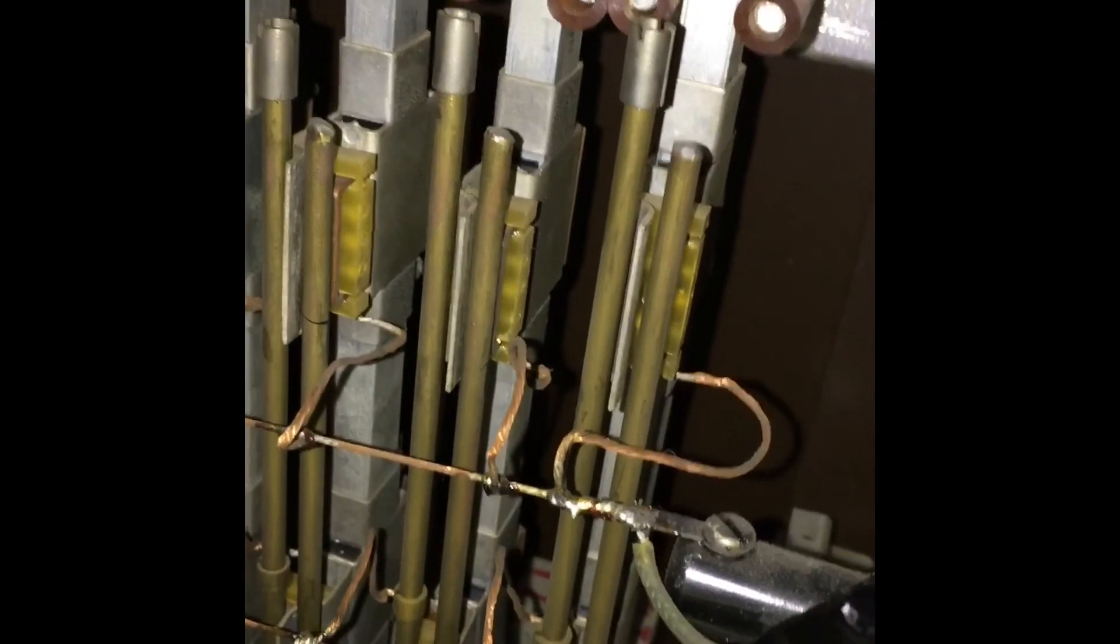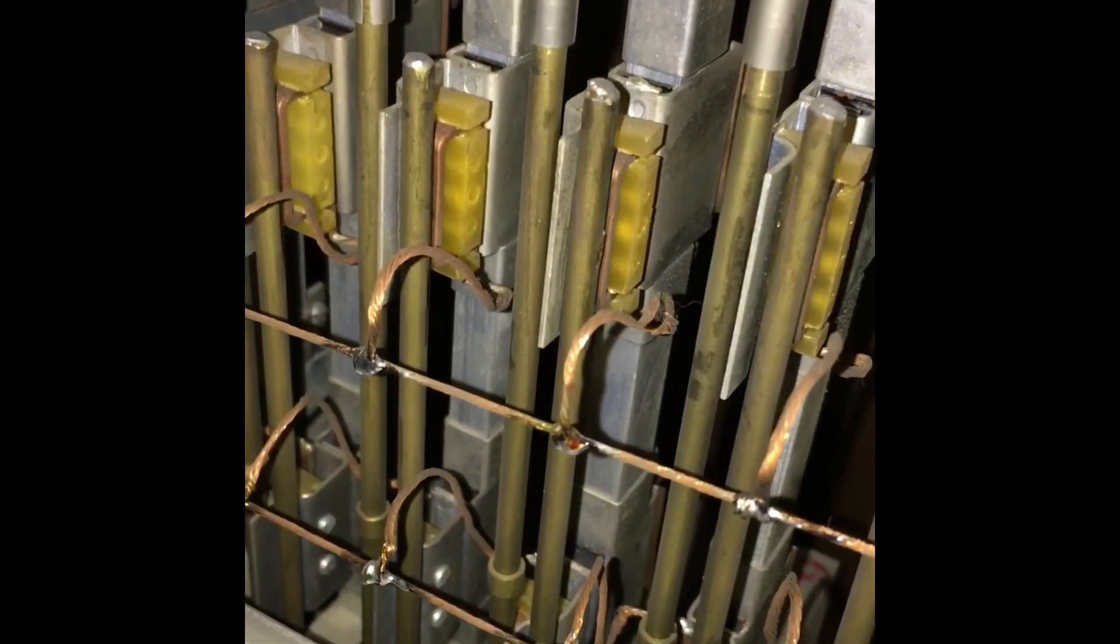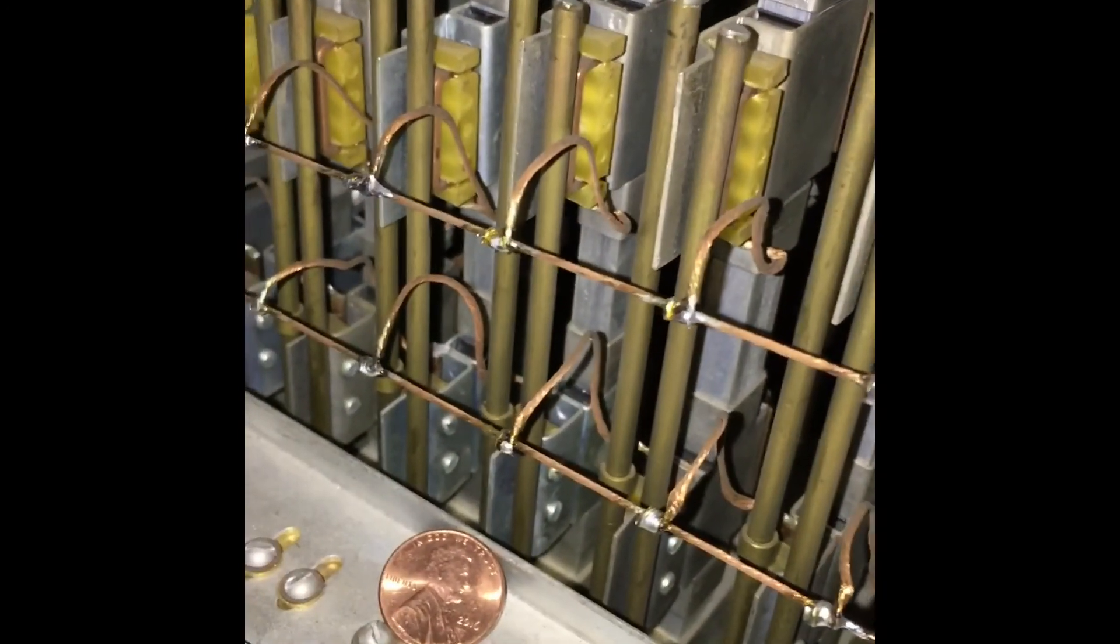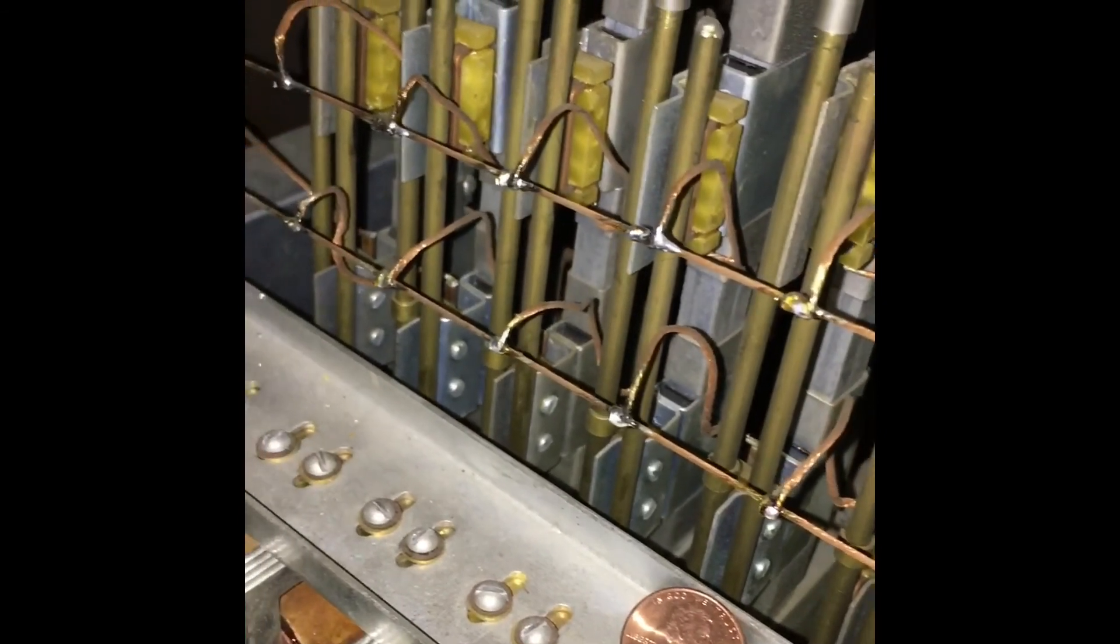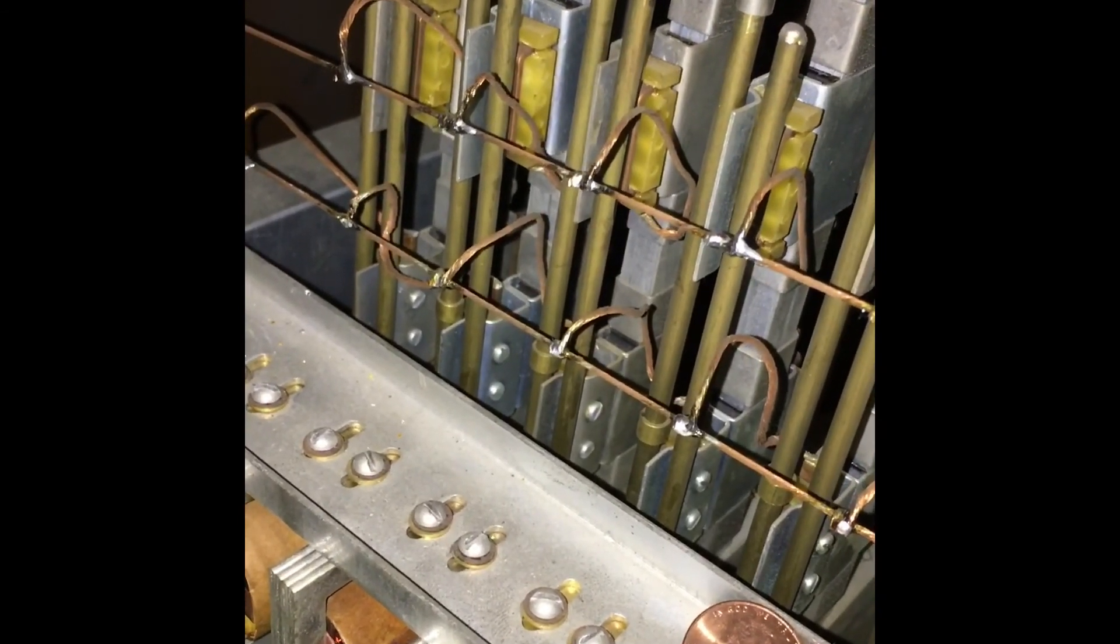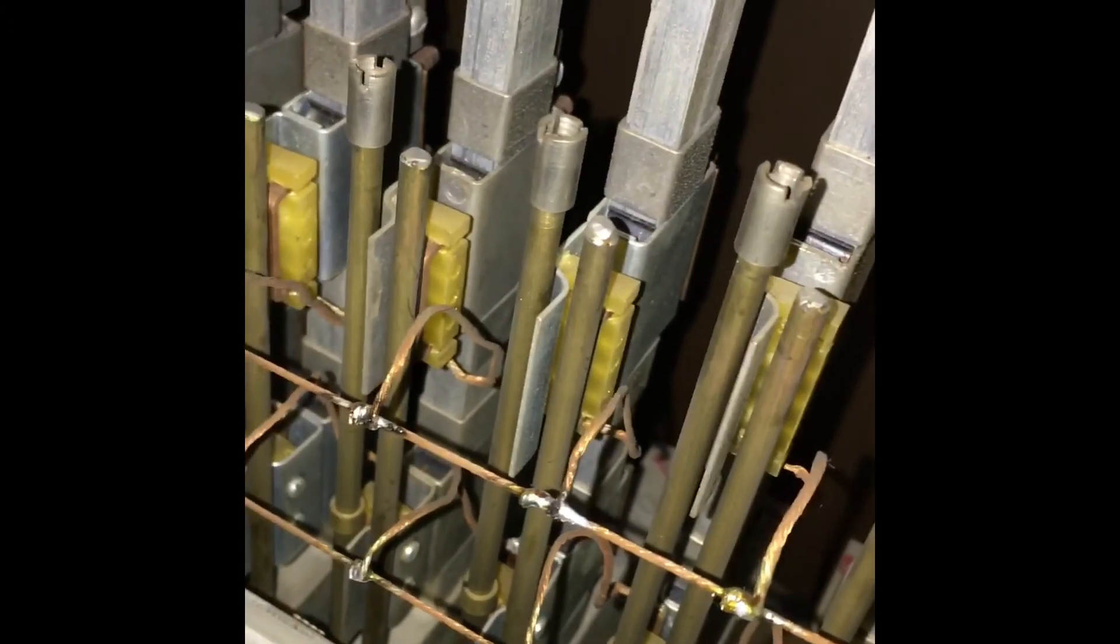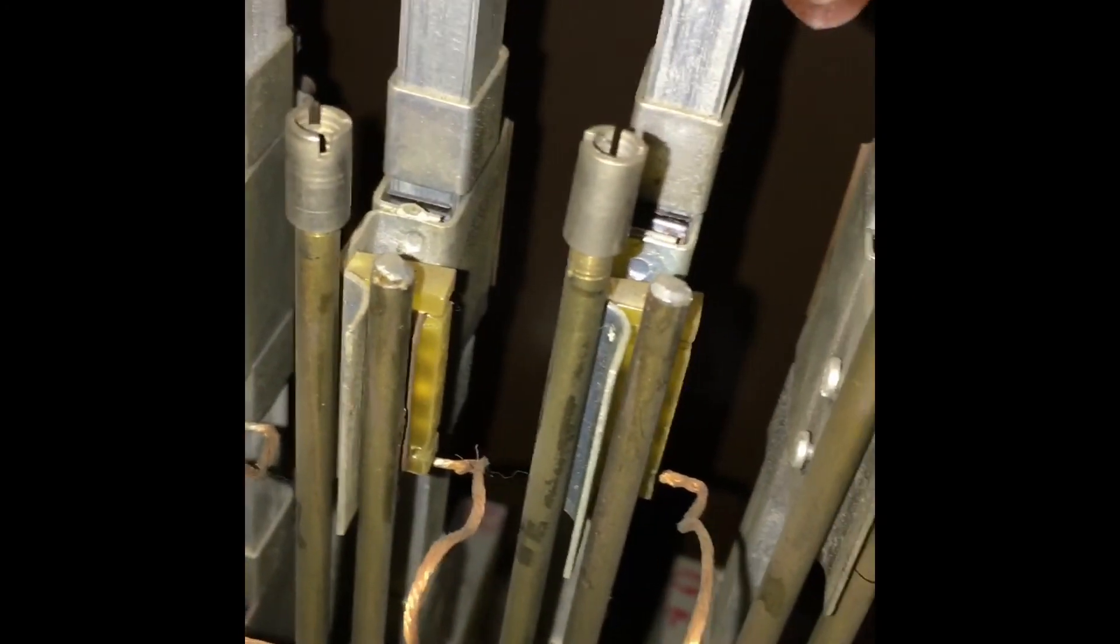Here we have the inside of octave five, the highest octave. So these little rods don't even have stabilizers. They're very, very short. I put a penny in there to give you a sense of scale. And interestingly, if you look at the top of the shorter rods, the final tuning has been accomplished not with a collar, but by adding a little drop of solder just to get it to the right length.